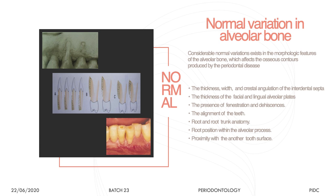Normal variants that can change bone morphology include thickness, width, and crestal angulation of interdental bone; thickness of facial and lingual alveolar plates; presence of fenestration and dehiscence; alignment of teeth; root and root trunk anatomy; root position within the alveolar process; and proximity of adjacent teeth. For example, if adjacent teeth are too close to each other, the interproximal bone may be very thin or absent due to root proximity — this cannot be taken as a pathological finding.